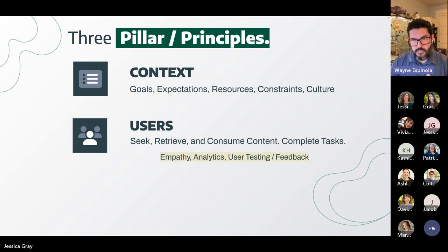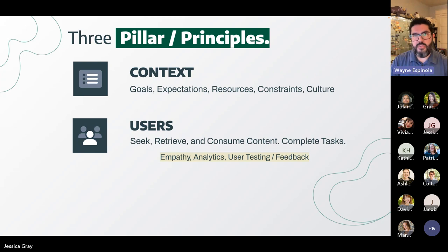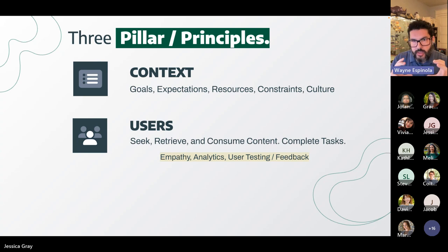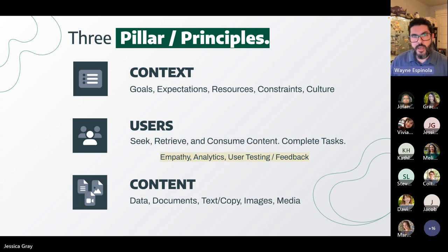Another tool to define your users is analytics — look at their behavior, where they're going, their path through the site. Another aspect is user feedback and user testing, such as having them think aloud about how they would go through your site, or observing them actually clicking through it. This feedback, analytics, and empathy all help you create a picture of the user. The last pillar is content — your data, documents, copy, images, and media. The intersection of these three pillars — context, users, and content — is information architecture.